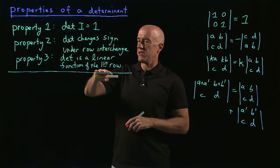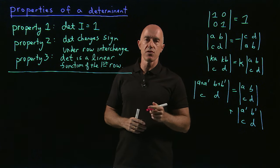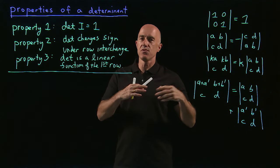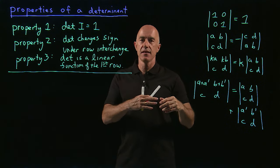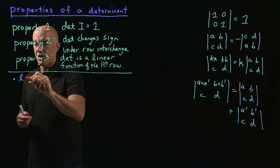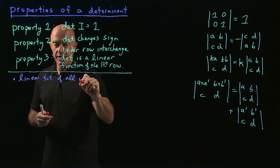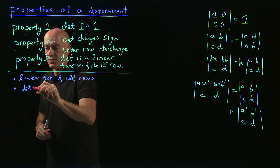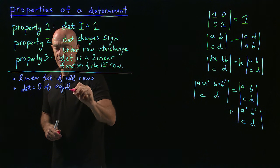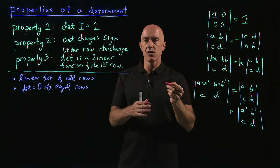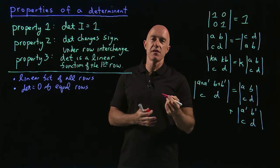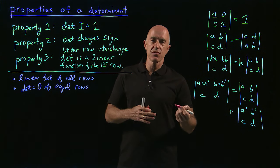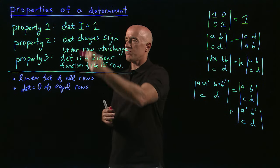Property three says the determinant is a linear function of the first row, and property two says you can interchange rows and change the sign. By combining these — swapping rows, using the linearity of the first row, then swapping back — you can show that the determinant is a linear function of all rows, not just the first. You can also prove that the determinant equals zero if two rows are equal: switching those identical rows changes the sign, but the determinant is unchanged, so it must be zero — just like if x equals minus x, then x is zero.